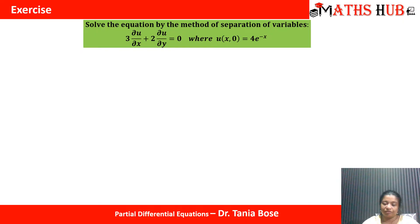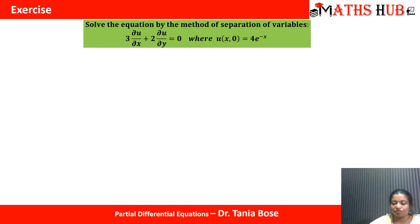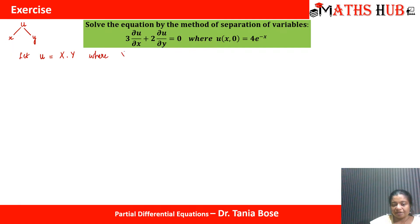Let's understand this method with the help of a question. We need to solve the equation by the method of separation of variables: 3·∂u/∂x + 2·∂u/∂y = 0, where u(x, 0) = 4e^(-x). Here u is the dependent variable depending on x and y. So the first step is to assume that u equals a product of capital X and capital Y, where X is a function depending only on x, and Y is a function depending only on y.